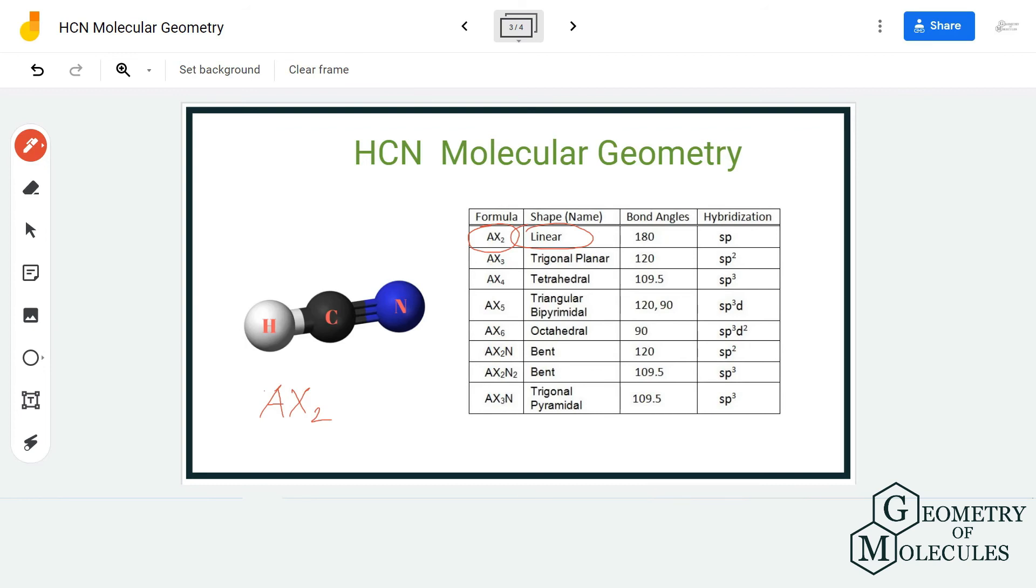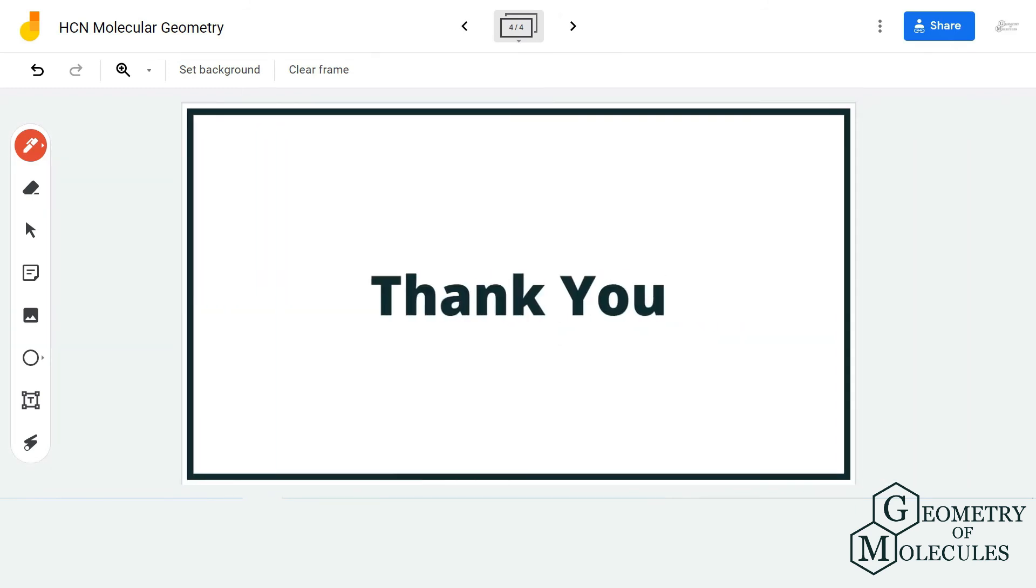The bond angles are 180 degrees because they are all in a straight line and in the same plane. I hope this video helps you understand the molecular geometry of HCN molecule. For more videos on Lewis structure, molecular geometry, and polarity of molecules, make sure to subscribe to our channel. Thank you for watching.